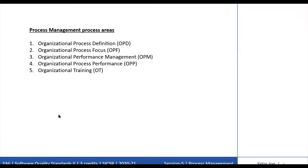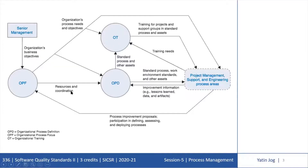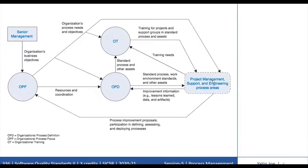The basic process management process areas provide the organization with the capability to document and share best practices, organizational process assets, and learning across the organization. This diagram provides a bird's eye view of the interactions among the process management areas with other process area categories. The Organizational Process Focus area, OPF, helps the organization to plan, implement, and deploy organizational process improvements based on an understanding of the current strengths and weaknesses — a kind of SWOT analysis of the organization's processes and process assets.